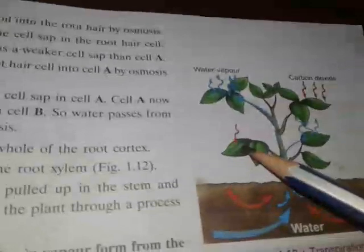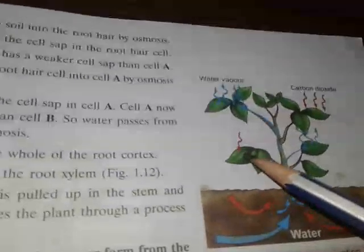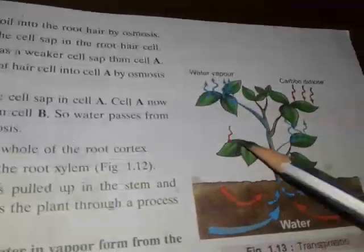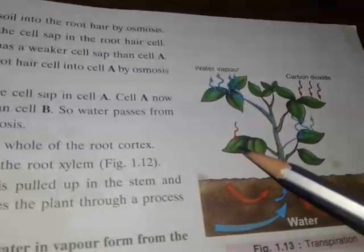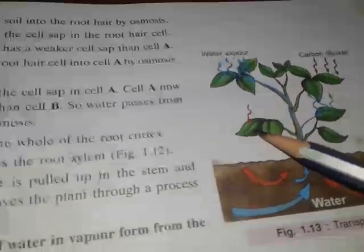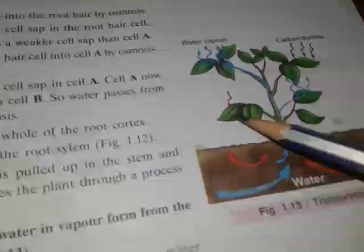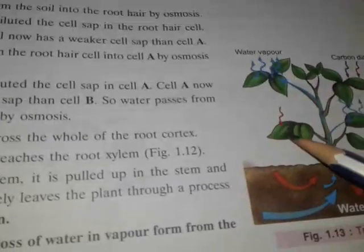In the transpiration process, stomata also play a role. The leaf contains small pores called stomata. Many kinds of gases are absorbed through the stomata, and water molecules are also released through the stomata.